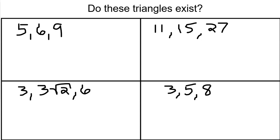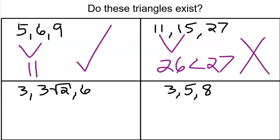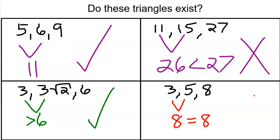In the top left, 5 plus 6 is 11, and 11 is greater than 9, so yes, this triangle exists. In the top right, 11 plus 15 is 26, and 26 is less than 27, so no, this triangle cannot possibly exist because the two segments can't connect. In the bottom left, we have 3, 3√2, and 6. Since 3√2 is greater than 3, and 3 plus 3√2 is greater than 6, that triangle exists. And in the bottom right, we have 3, 5, and 8. Since 3 plus 5 equals 8, this is not a triangle — it's actually just a segment.